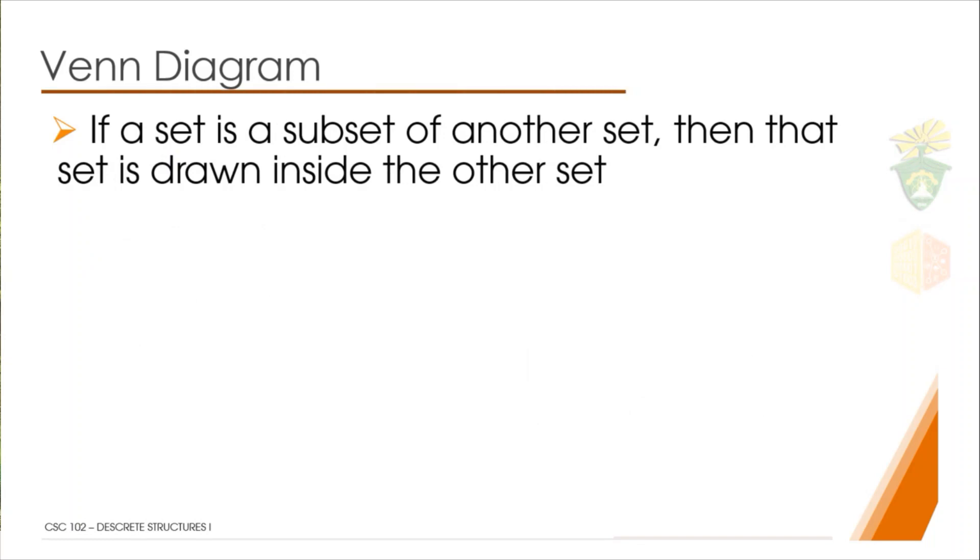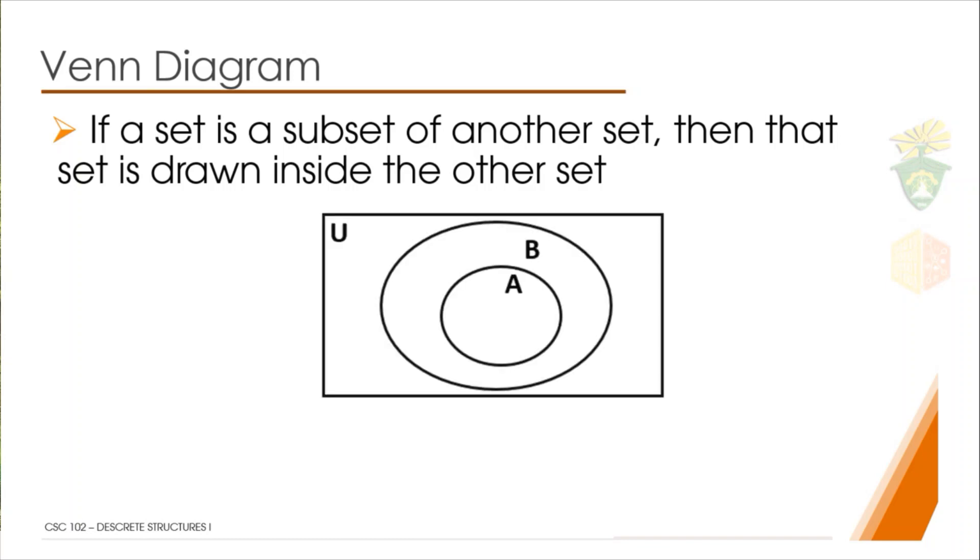Another instance is when the set, say set A, is a subset of set B. Then we draw the Venn diagram representation as this one. In the last lecture video I already discussed what a subset is. It's basically a set inside another set. In this representation, we say that A is a subset of B since A is found inside set B.